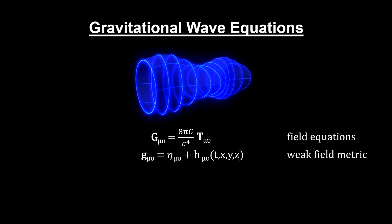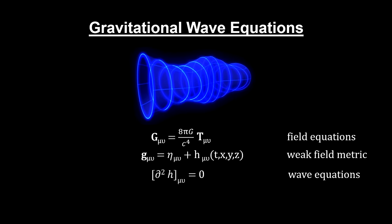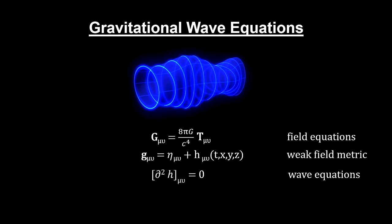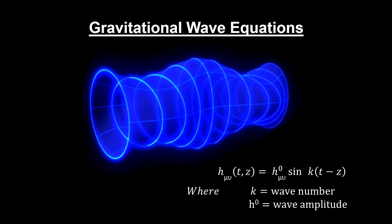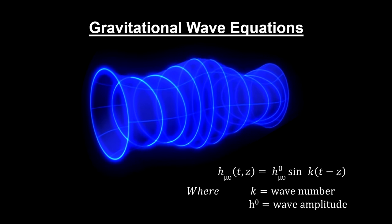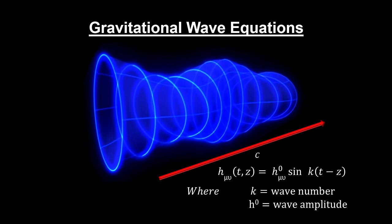A ripple represents small deviations from this flat spacetime metric. We use h to represent these deviations. Solutions to Einstein's equations show that a gravitational wave's metric oscillates sinusoidally, just like light, and it travels at the same speed as light.